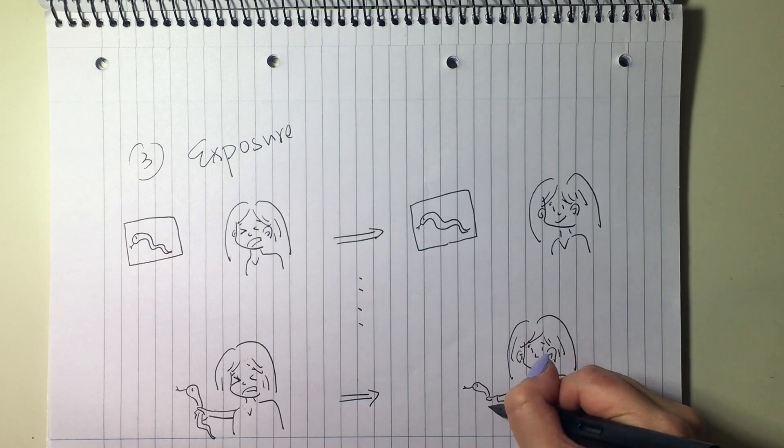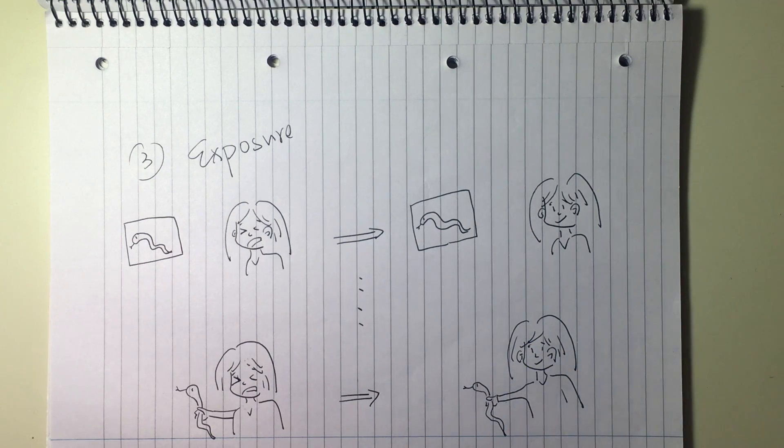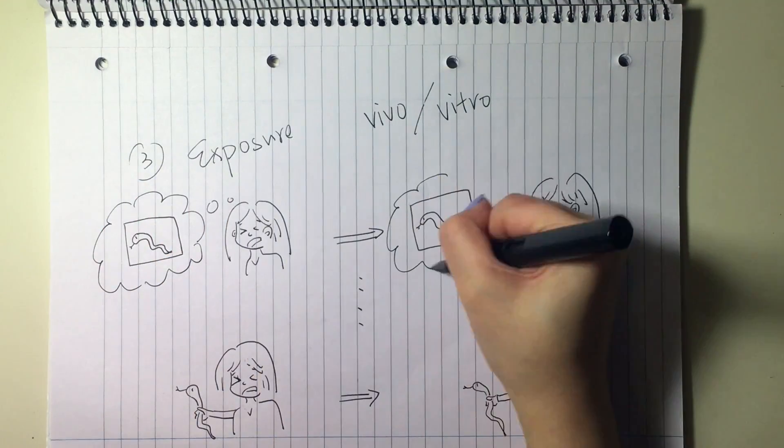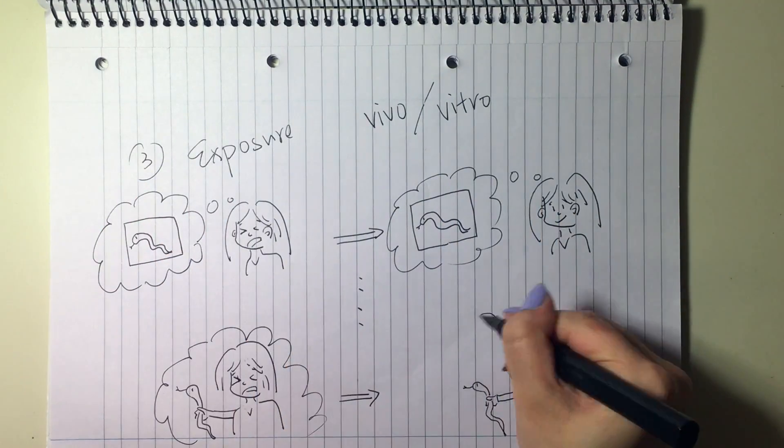Exposure can be done in two ways: in vivo, where the client is actually exposed to the phobic stimulus, or in vitro, where the client imagines exposure to the phobic stimulus.